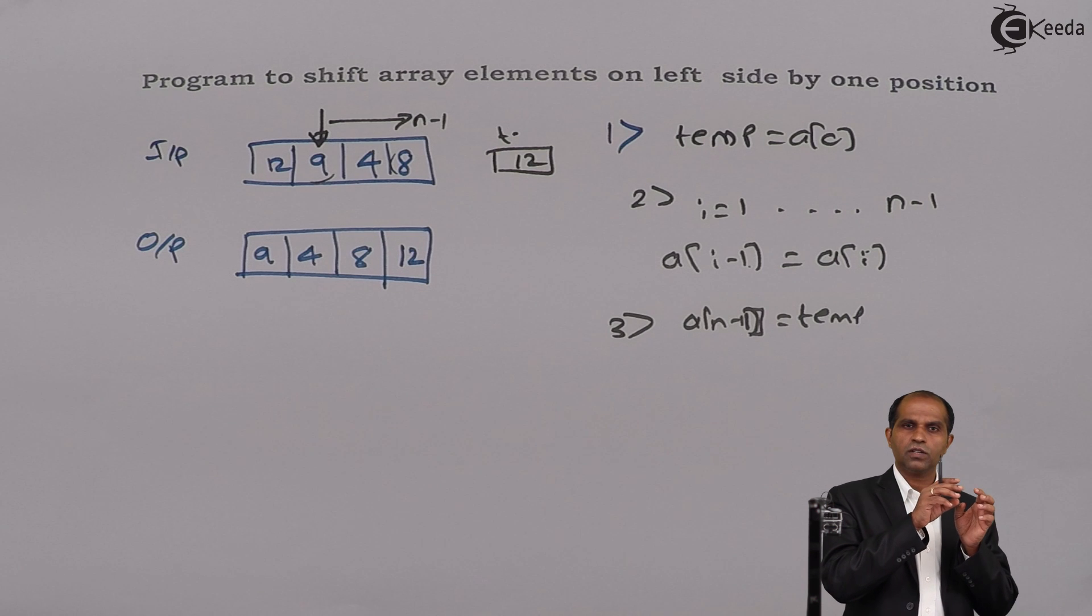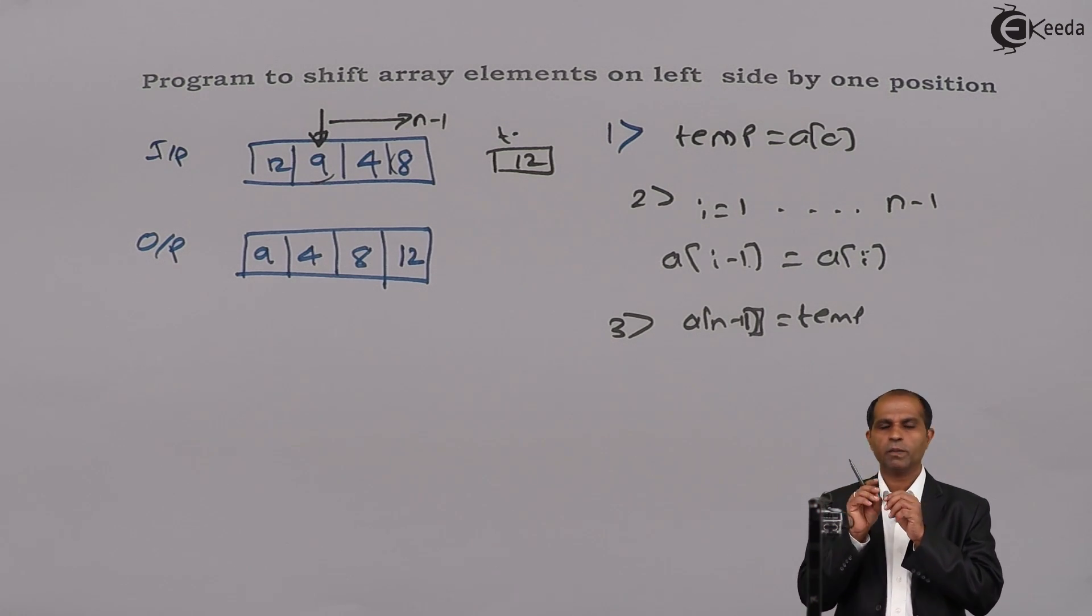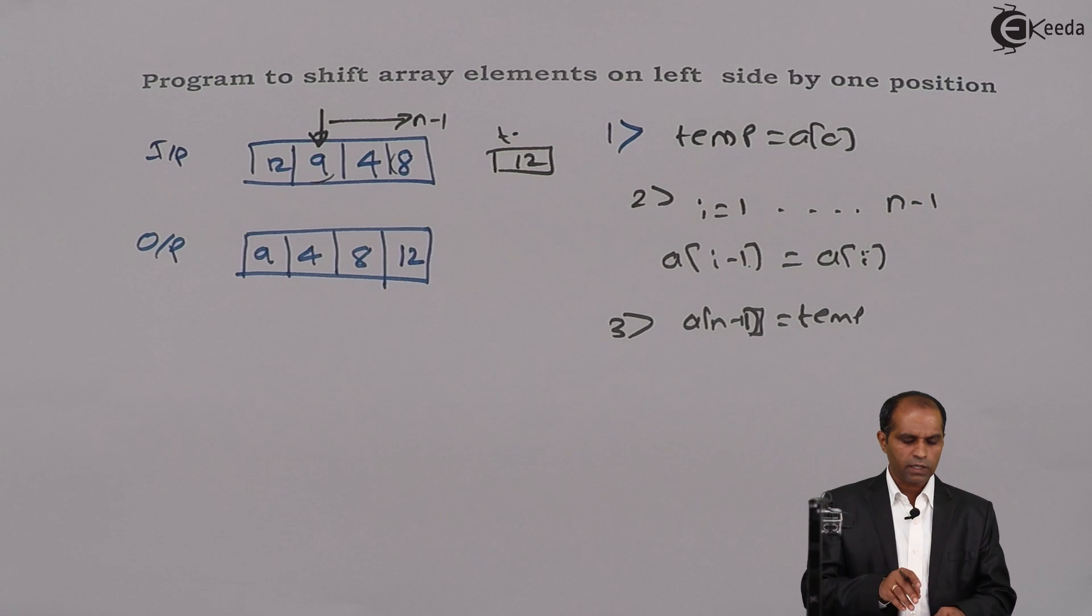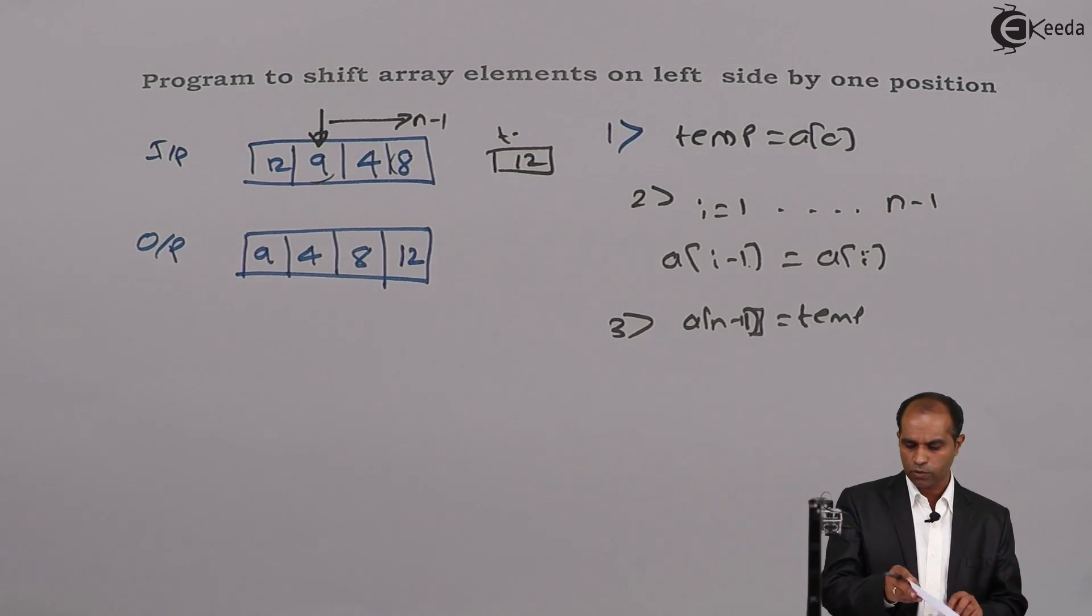And then, since the element has taken out from a[0], it should get fixed at a[n-1] and that is in temp. Let us look at the code and understand this with a set of numbers also.